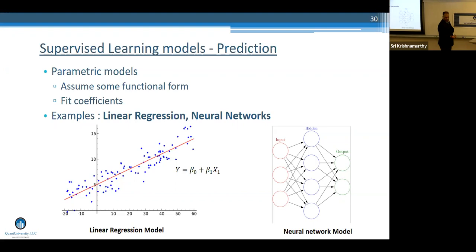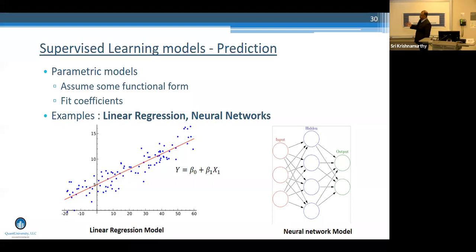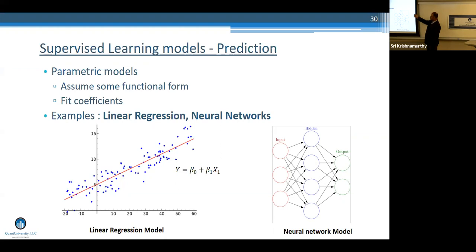We can generalize this in the context of neural networks. Instead of restricting degrees of freedom to one axis, you can have multiple nodes, multiple layers, and multiple activation functions. This allows you to look at interactions of different variables - combinations of X1, X2, X3 - and also factor in nonlinearities through activation functions. This gives a generic parametric framework to come up with the best possible model.